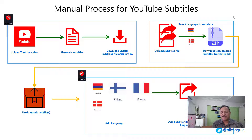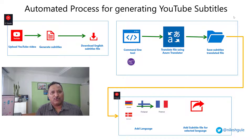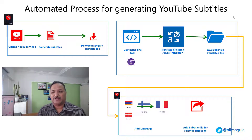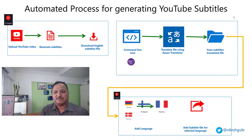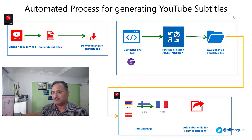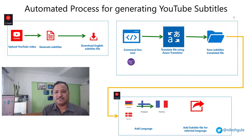In Part 1 we looked at how we can automate the process of generating the subtitles file. We used the Azure Translator for this and built a small command-line utility which can translate a subtitle file — starting with the one downloaded from the original video in English — into multiple languages. We translated the files into almost 40 different languages, which was the configured number of languages.